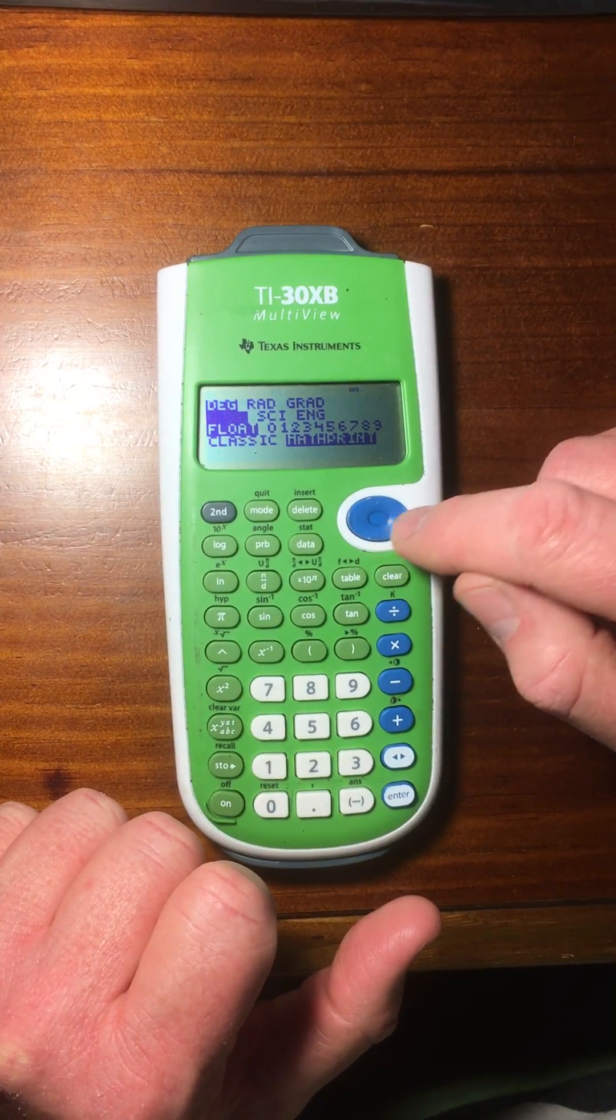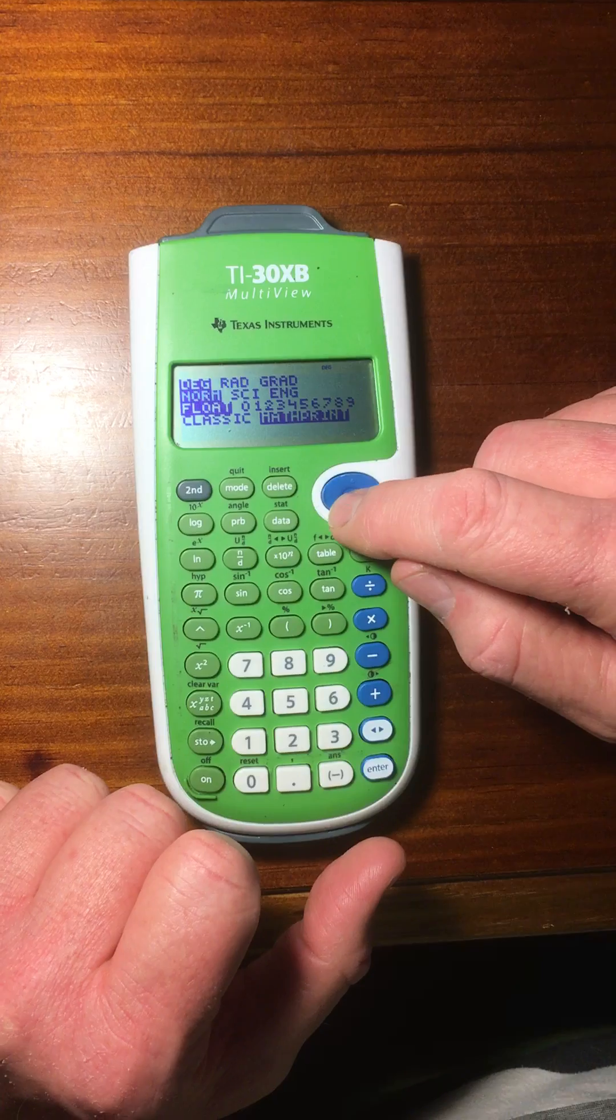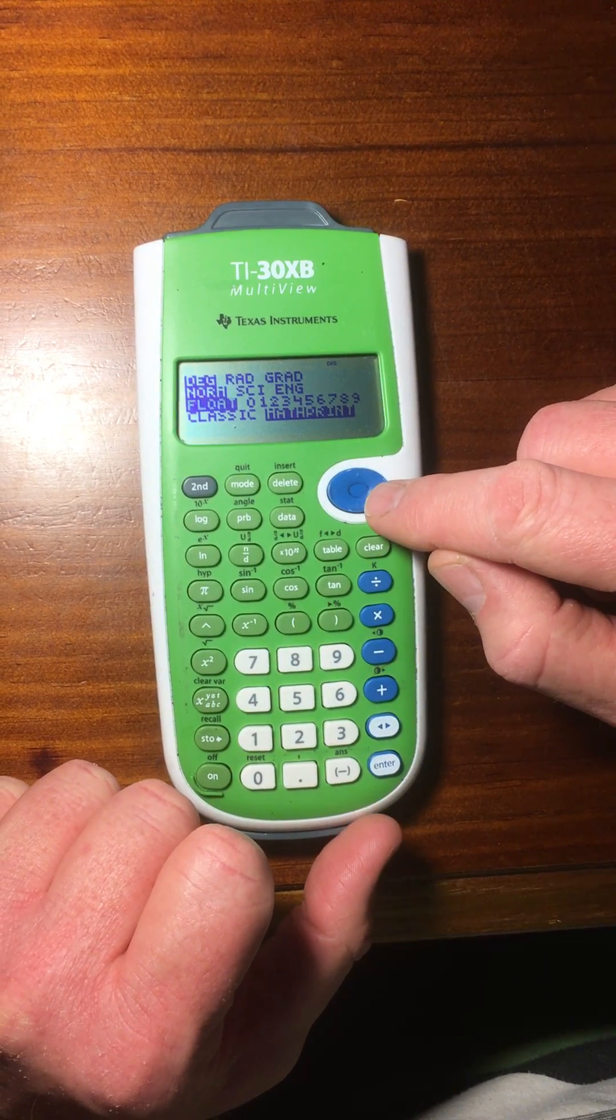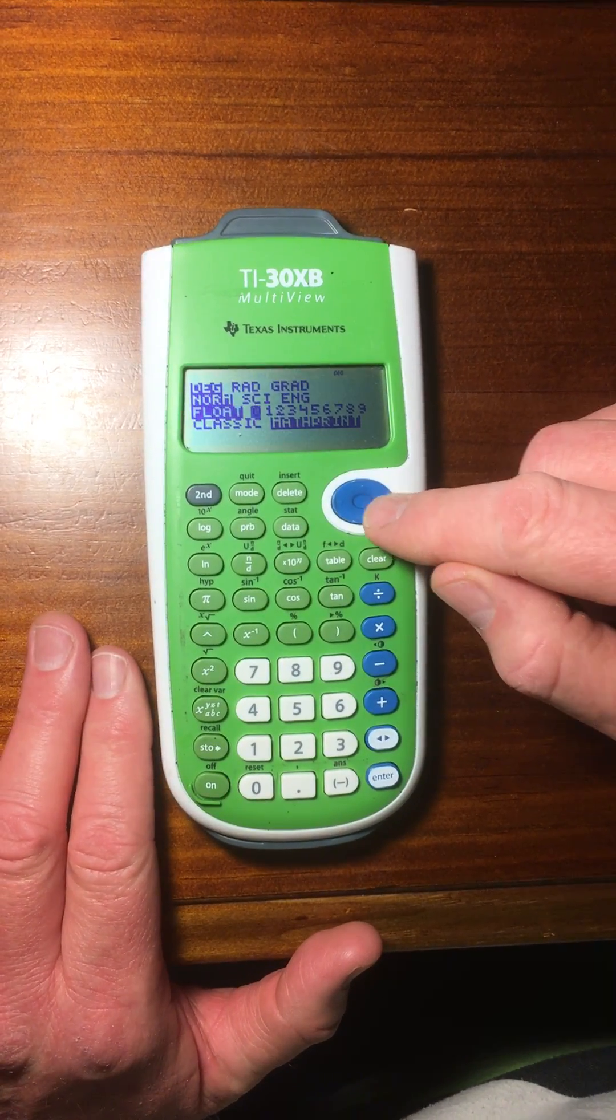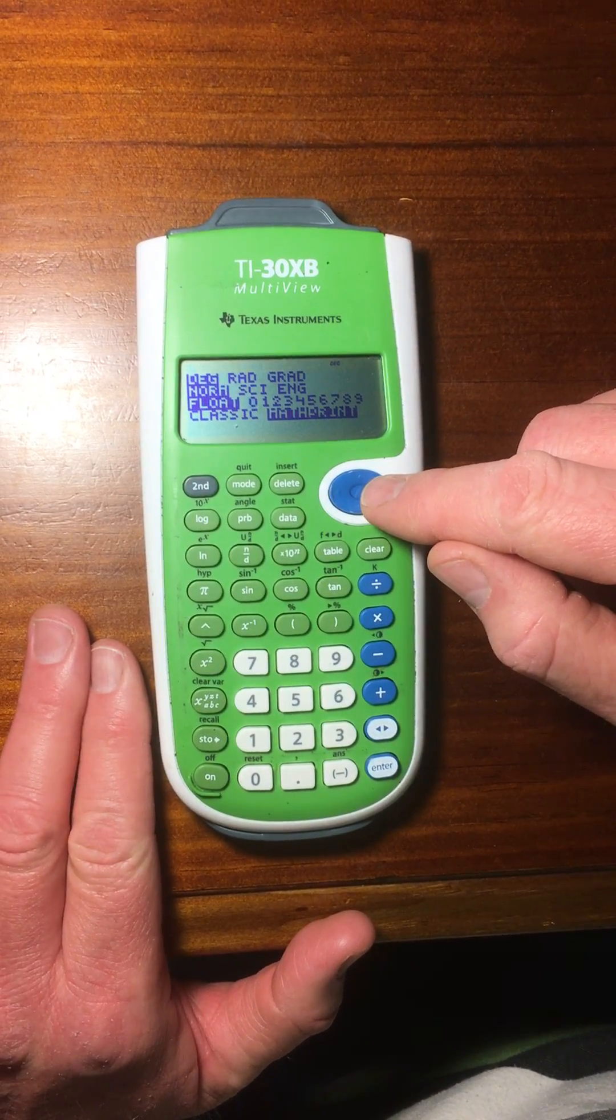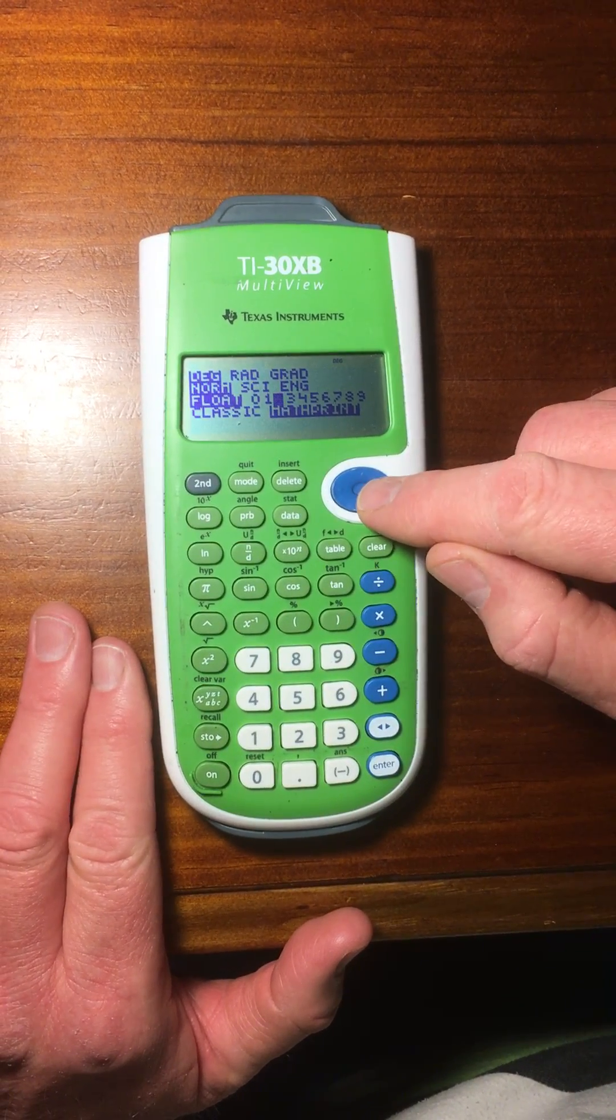You can have it in normal mode, scientific mode, or engineering mode. And you can determine how many decimals you want your answer to come at. So, float means the calculator will round it off. Zero means your answer will always come back with zero decimal places, one decimal place, two decimal places, and so on.